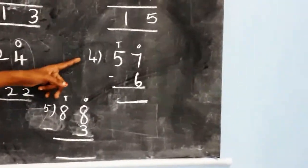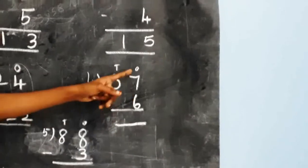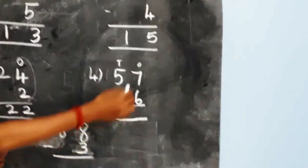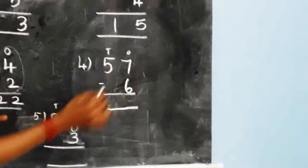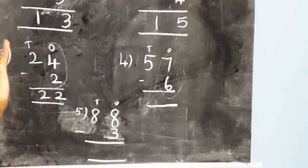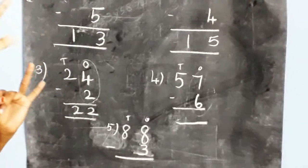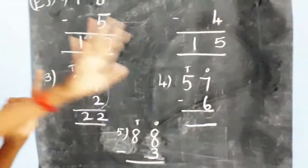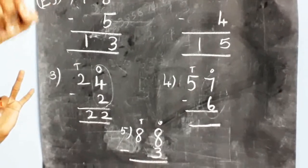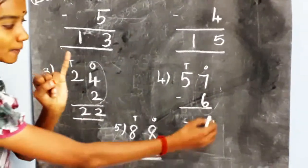Now look at the fourth sum: fifty-seven minus six. Subtract the ones place first. Here seven — take a finger of seven and subtract six: one, two, three, four, five, six. The balance is one.